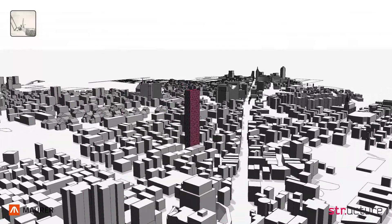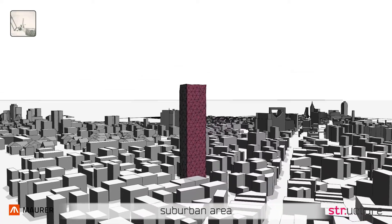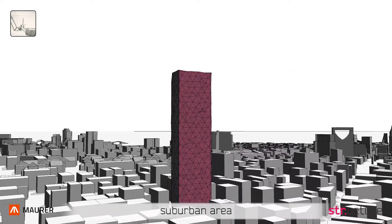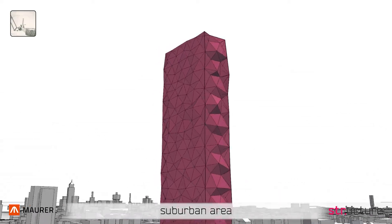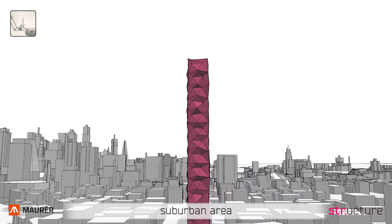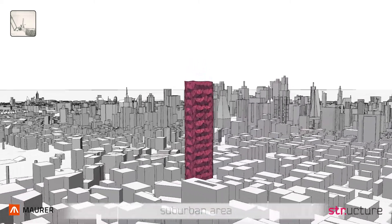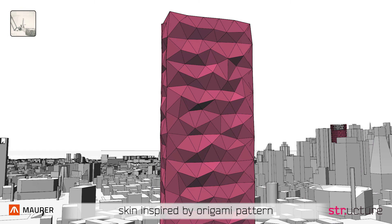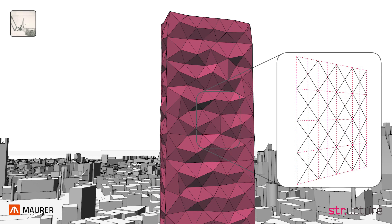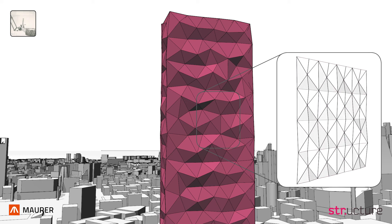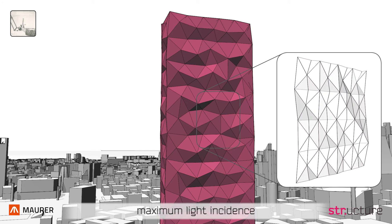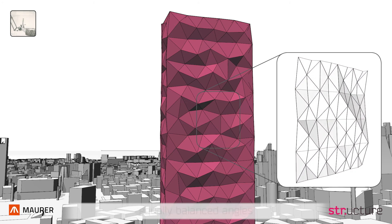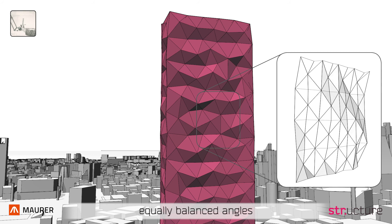The second building is located in a suburban area with low-rise buildings, where wind flow is dominated by the surface roughness of the terrain. The skin of the building is inspired by an origami pattern, which provides a concept for the parametric facade. The optimization criteria are maximum light incidence and equally balanced angles of the substructure.